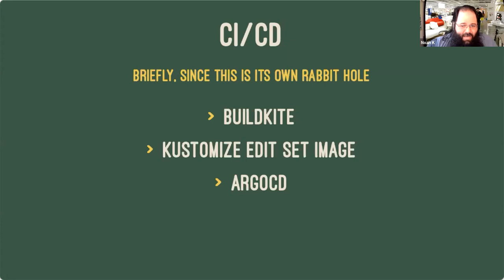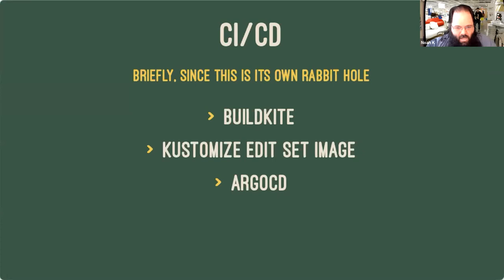We have all of this wrapped in a continuous deployment system via BuildKite. Any commit merged into the main branch for either a solid or a pipeline gets built into a container image, edited into the customized configuration, pushed up into a registry, and then deployed via Argo CD. There's a little more complexity in some of the fancier remote solids because there's an operator involved, but overall it's a fairly simple, straightforward system — as soon as you merge it, it ends up in the system.